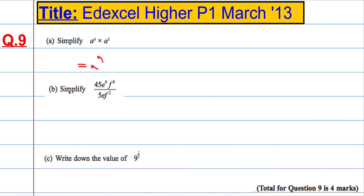Next part, simplify. 45e to the 6, f to the 8, divided by 5ef squared. Okay, now this looks a lot trickier than it is. Let's just work on the numbers so far. 45 divided by 5 will give me 9, so that gives me 9.